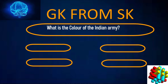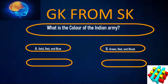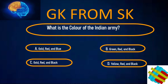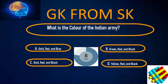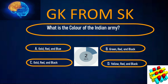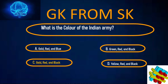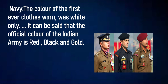What is the color of the Indian Army? A. Gold, Red and Blue, B. Green, Red and Black, C. Gold, Red and Black, D. Yellow, Red and Black. Your time starts now. Correct answer: C. Gold, Red and Black. It can be said that the official color of the Indian Army is Red, Black and Gold.